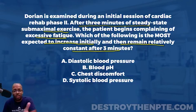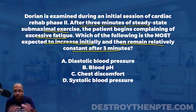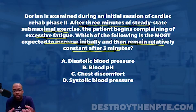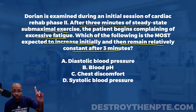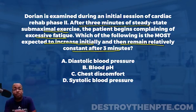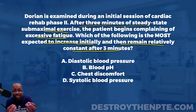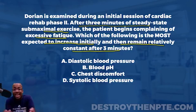Answer choices are: A: diastolic blood pressure, B: blood pH, C: chest discomfort, D: systolic blood pressure. The key here is that your answer has to satisfy both parts of the question stem: number one, increase initially, and number two, remain relatively constant after three minutes. You'll see this kind of two-part question structure on practice exams and potentially on the NPTE.